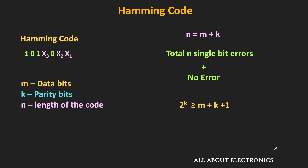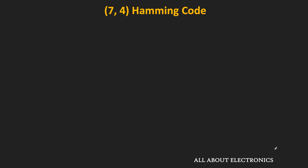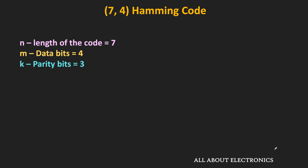When m = 1 and k = 2, it is the case of the 3-1 repetition code we saw earlier, where 3 is the length of the code and 1 is the number of data bits. With 3 parity bits, the next very popular Hamming code is the 7-4 Hamming code, where n = 7 and m = 4. When m = 4, the required number of parity bits is 3. So now let's see the encoding of this 7-4 Hamming code.